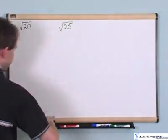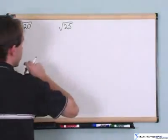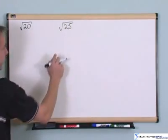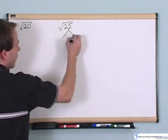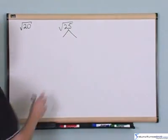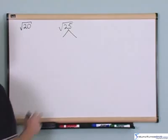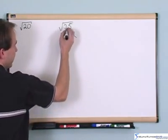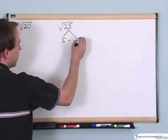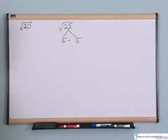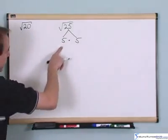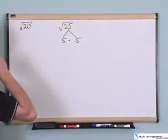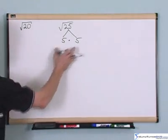Before we actually get on to my first problem, we'll continue working with this. The way you do this, if you didn't know the answer, is you draw what I call a tree here, and you try to write numbers down that multiply together to give you 25. The only thing I can think of off the top of my head that multiplies together to give me 25 is 5 times 5. I could write 1 times 5, but that really doesn't help me. What I can use here is 5 times 5.